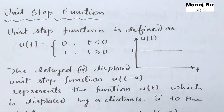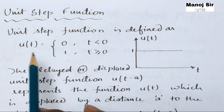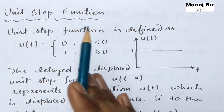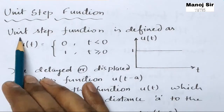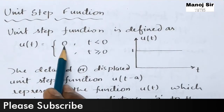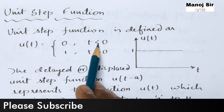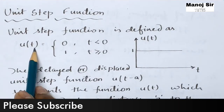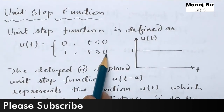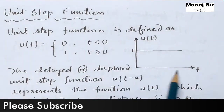Please subscribe to the channel and like this video if you seriously learn something from this video, and do share with your friends. Now starting this topic: the unit step function u(t) is defined as u(t) = 0 when t is less than 0, and u(t) = 1 when t is greater than or equal to 0.